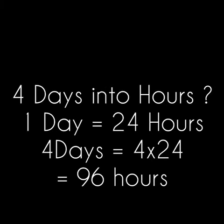So first of all let's learn how to convert days into hours. Just do the multiplication by 24. 1 day is equal to 24 hours. So 4 days is equal to 96 hours.